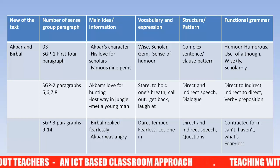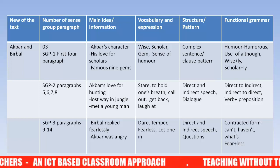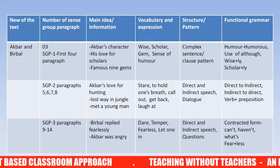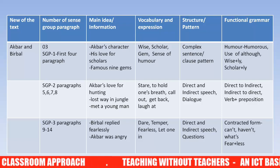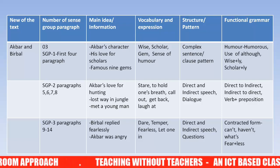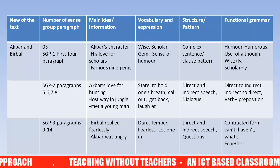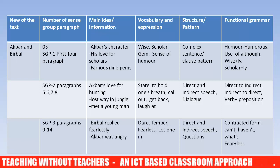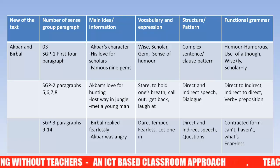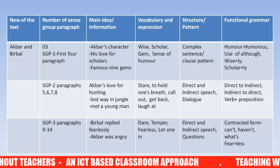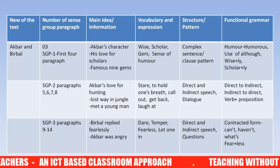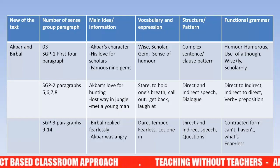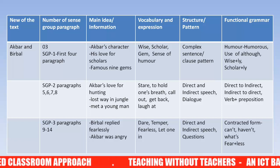In the first SGP, the main ideas are Akbar's character, his love for scholars, and his famous nine gems. The vocabulary and expressions include: wise, scholar, gem, sense of humor. The structure and pattern includes complex sentences and clause patterns. Then we also identify the functional grammar for this SGP.